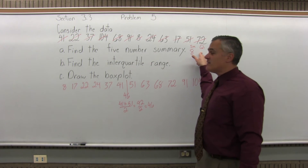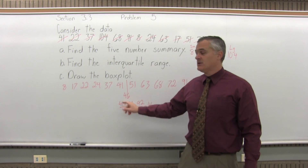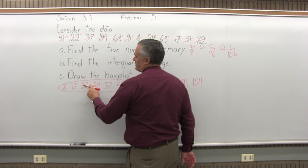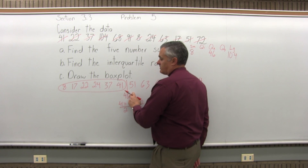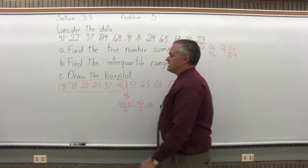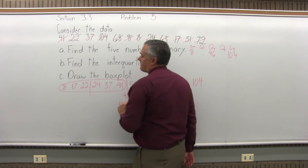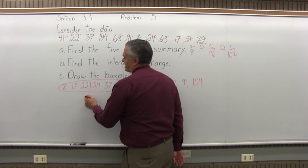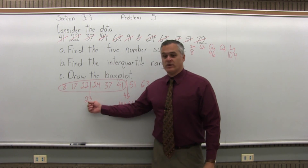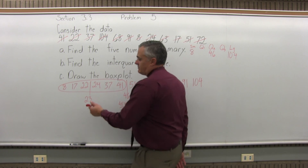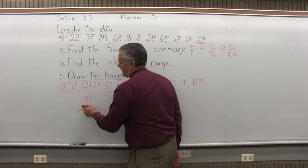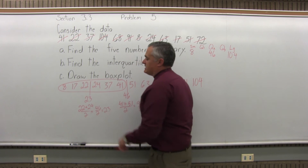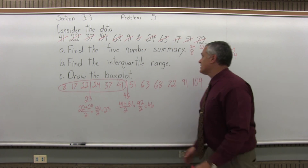Now I'll find Q1, which is the median of the lower half of the data, not including Q2. The lower half — the smallest six numbers — are 8, 17, 22, 24, 37, and 41. For a list of six values, the midway point falls between position 3 and position 4, which is between 22 and 24. 22 plus 24 is 46, divided by 2 is 23. So Q1 is 23.